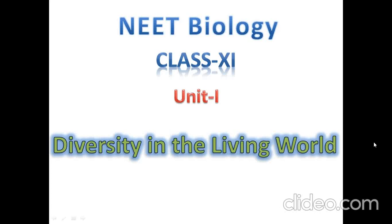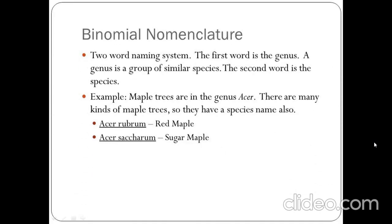Welcome friends to my channel READS BIOLOGY. Today we will see what is binomial nomenclature. It is a two-word naming system. The first word is the genus, a group of similar species, and the second one is the species.